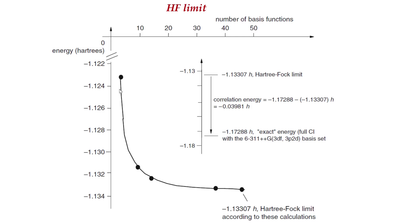As a pictorial representation, we plot energy versus the number of basis functions. More negative energy means it is approaching the ideal value. As you increase the number of basis functions, the energy becomes more negative and improves, eventually converging to a limit where adding more basis functions produces negligible change. This limiting energy is the Hartree-Fock limit.